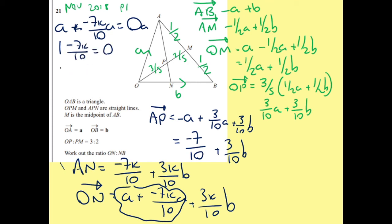I'm going to bring my 7K over 10 over. So 1 equals 7K over 10. I'm going to times both sides by 10 and then divide it by 7. So I've got 10 over 7 equals K.